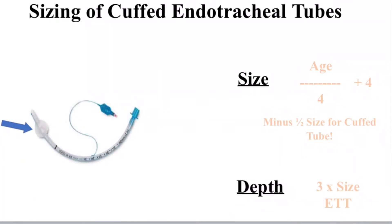We go down by half a size for a cuffed endotracheal tube. For example, for an eight-year-old boy, an uncuffed tube would be a size 6 endotracheal tube. For a cuffed tube, it would be 5.5.